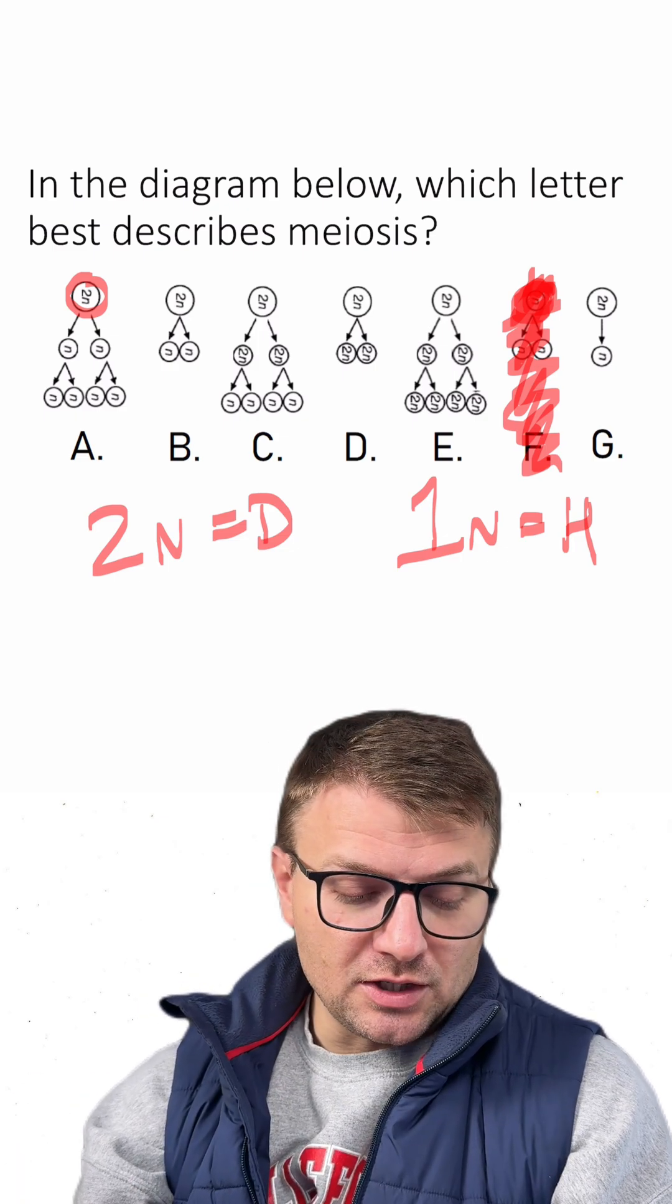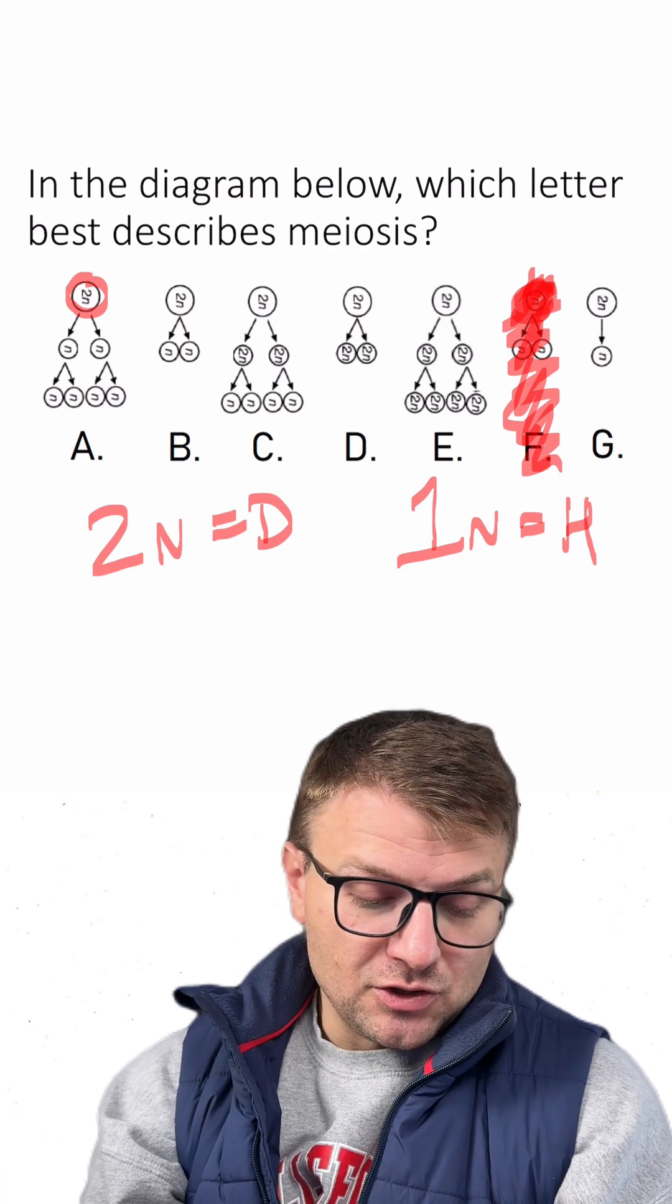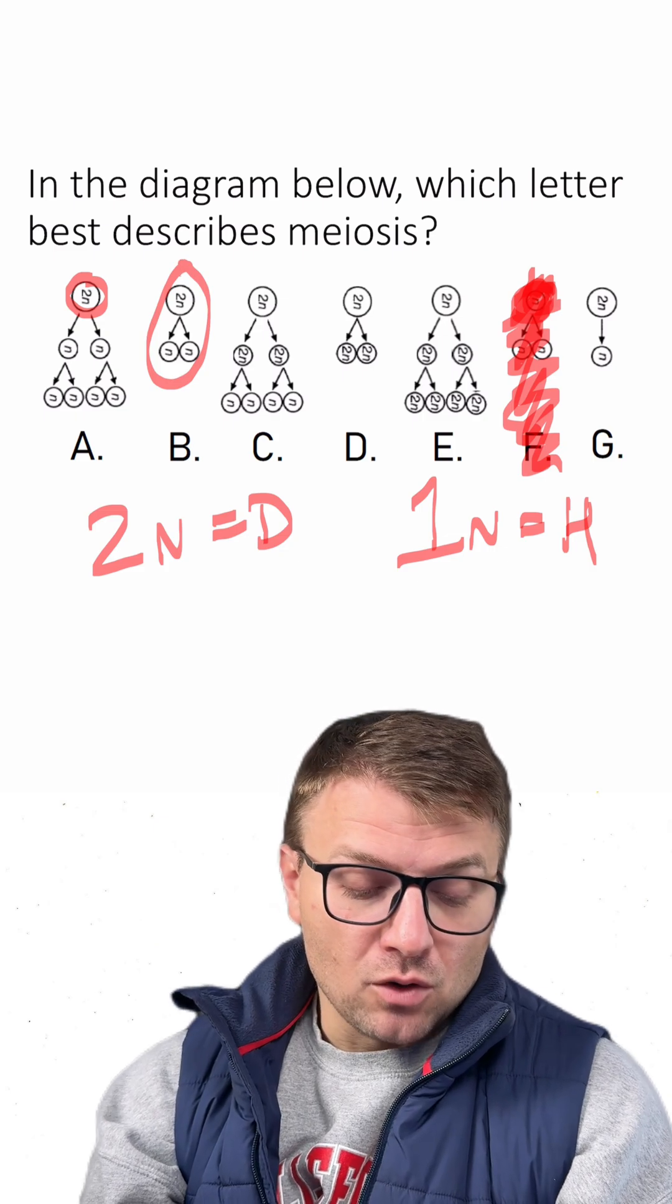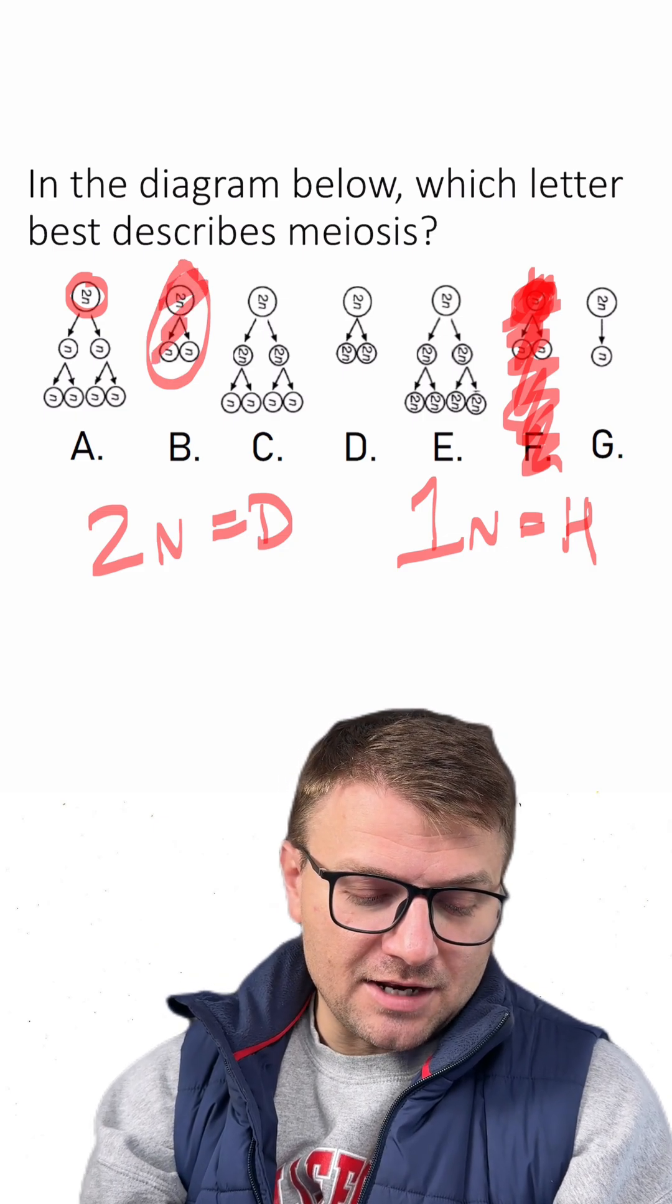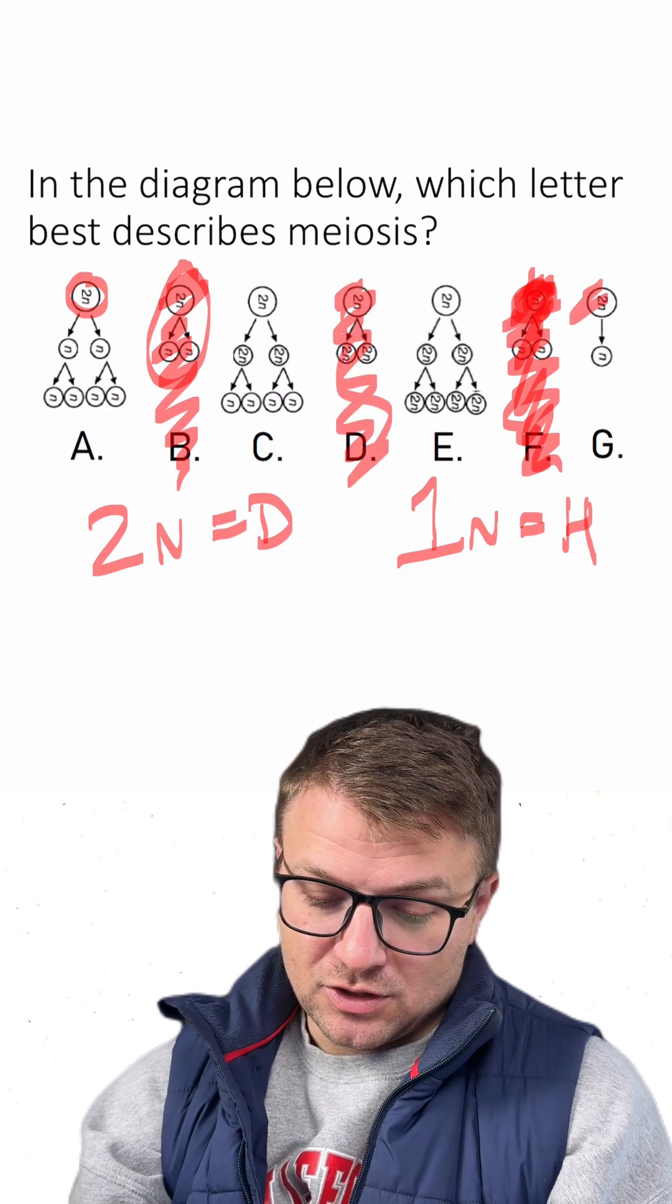The next thing we can do is we can cross off any letter or any diagram that doesn't have two rounds of division. So you can see like this diagram of B only has one round of division, so that is not our answer. Same with D and same with G.